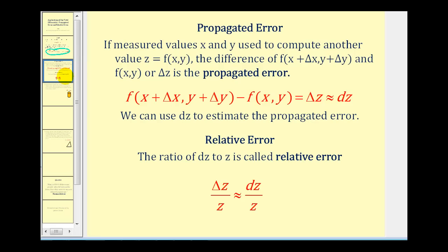First we're going to talk about propagated error. If measured values of x and y are used to compute another value z, then the difference of the function values, or delta z, is called the propagated error. To estimate the propagated error we can use differential z instead of the true delta z. Relative error is very closely related: the ratio of delta z to z, which is approximately equal to differential z divided by z, is called the relative error. This gives us a percent of error rather than just a numerical value, giving us a better idea of whether the amount of error is acceptable or not.